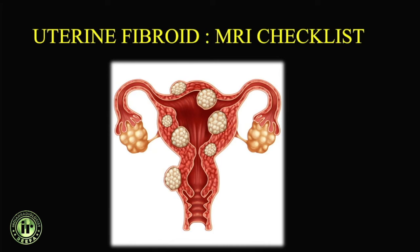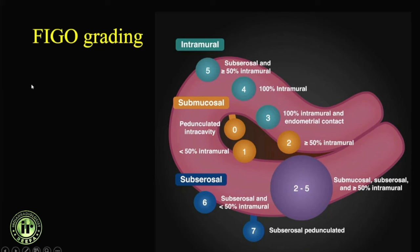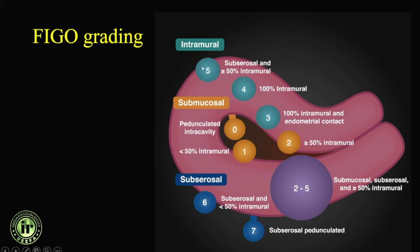Most importantly, we can predict any sarcomatous change within a fibroid — that is the critical point. The FIGO grading system is based purely on fibroid location and can be included in reports. A pedunculated intracavitary fibroid is grade 0; intramural with submucosal component is grade 1; more than 50% intramural with a small submucosal portion is grade 2; and 100% intramural with only endometrial contact is grade 3. Submucosal fibroids cause symptoms like dysmenorrhea, menorrhagia, and infertility.